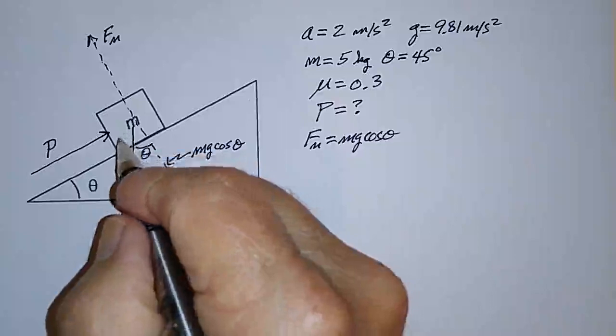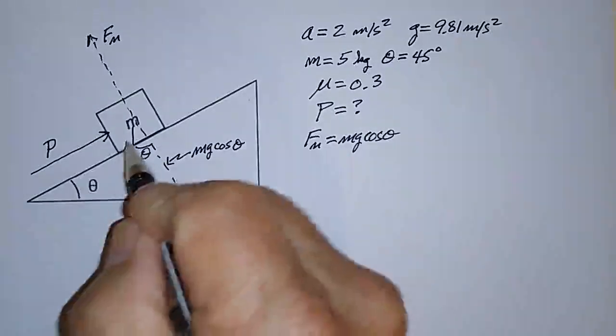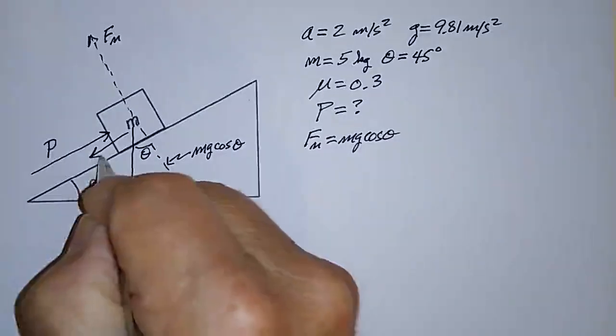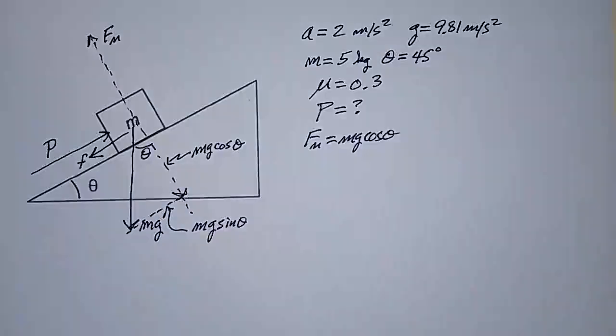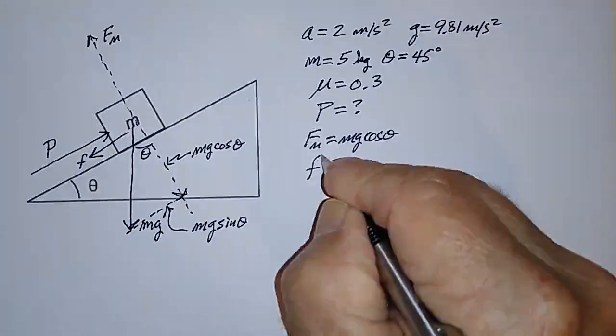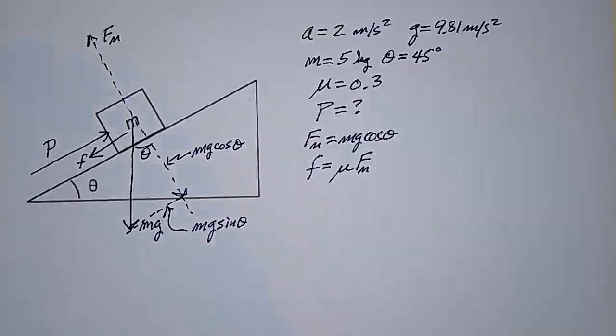The force due to friction is going to oppose the motion as we push in this direction. Friction is going to push back in this direction, and I'm just going to represent that by this little vector F right here, like that. Force due to friction is just equal to mu, the coefficient of friction, times the normal force.